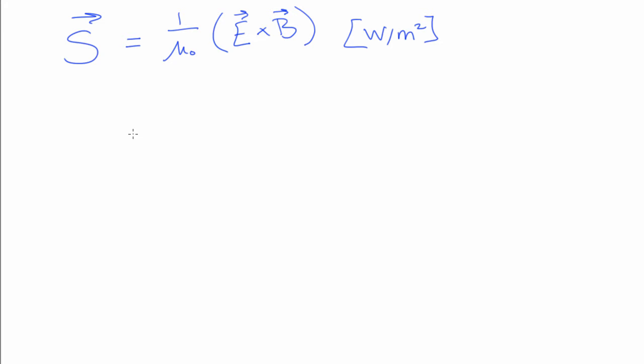So the relativistic equation of energy: energy squared is equal to the usual mc squared plus that of the momentum times c, all squared. Now we know that photons have no mass, so this excludes the first term.